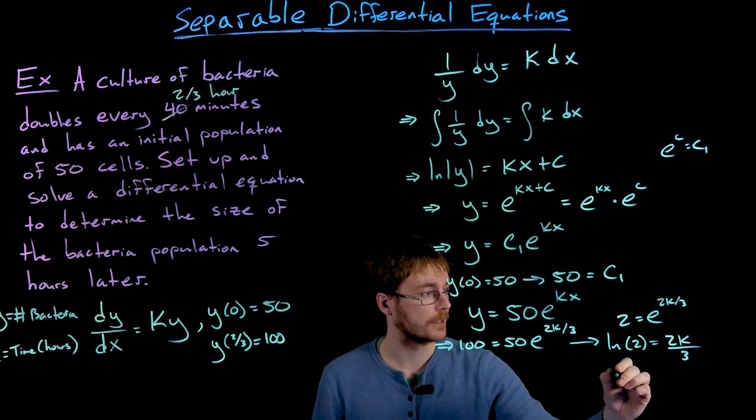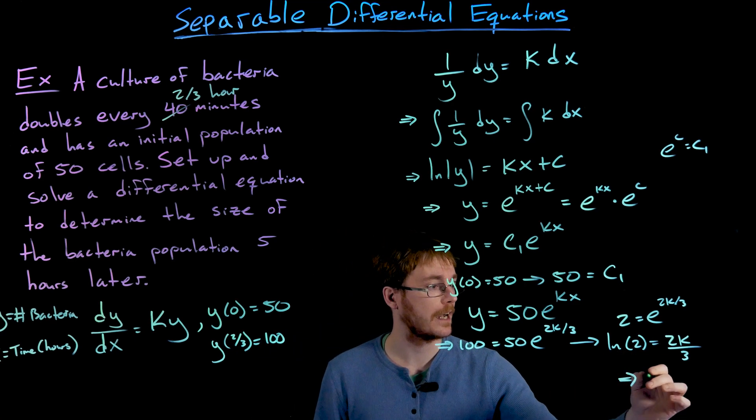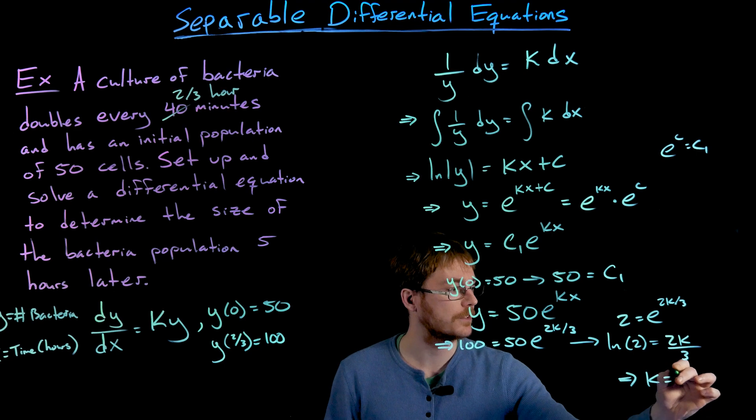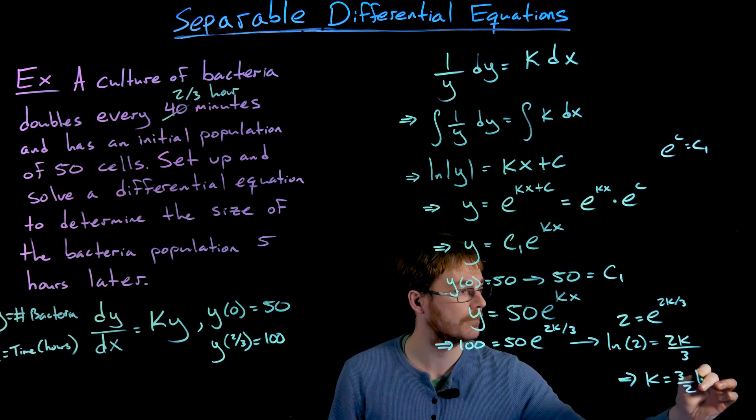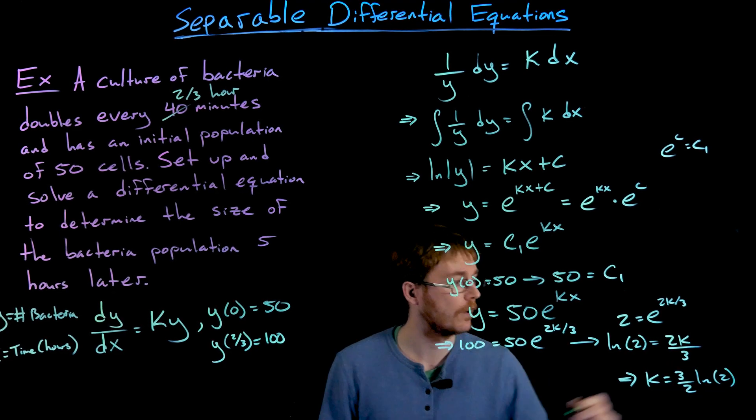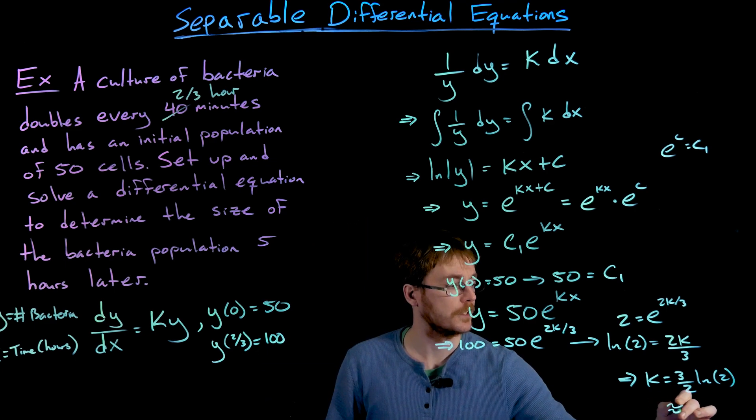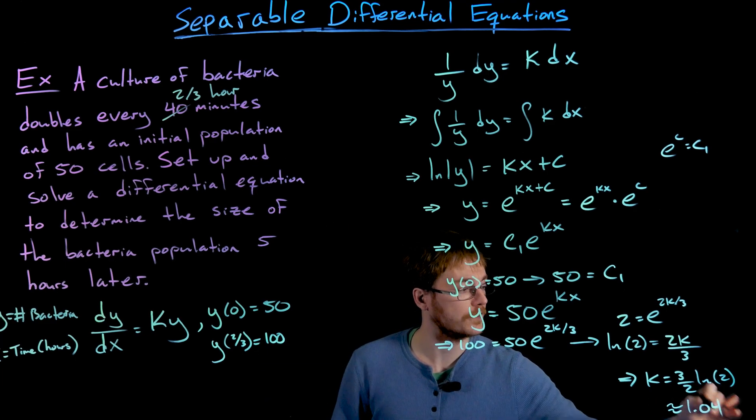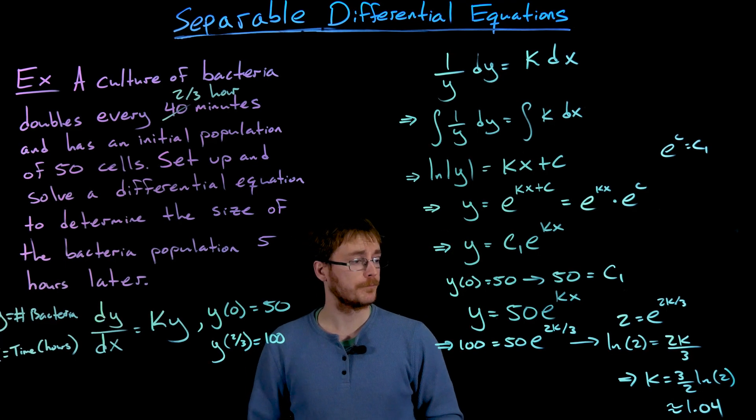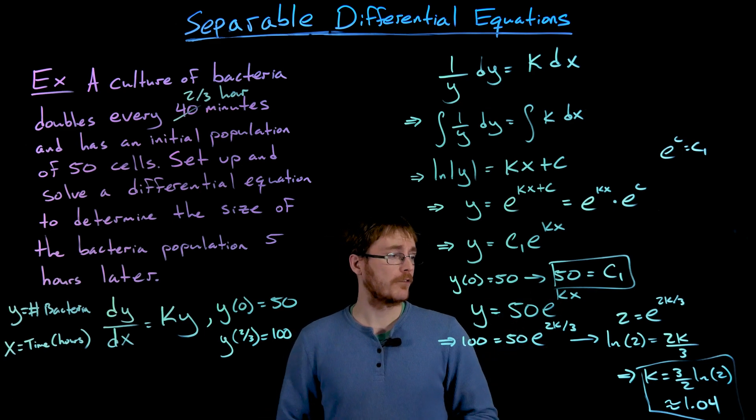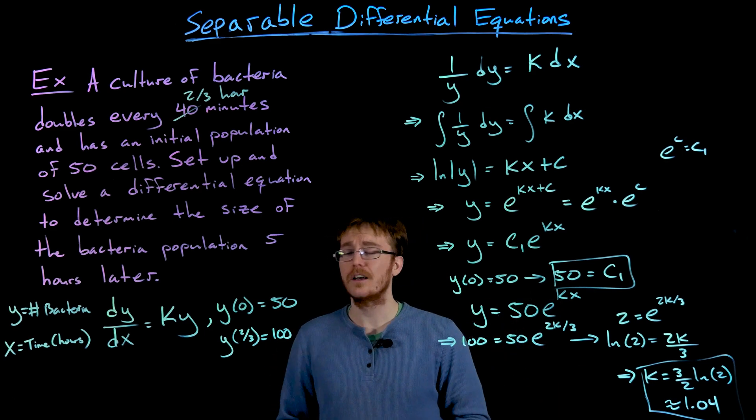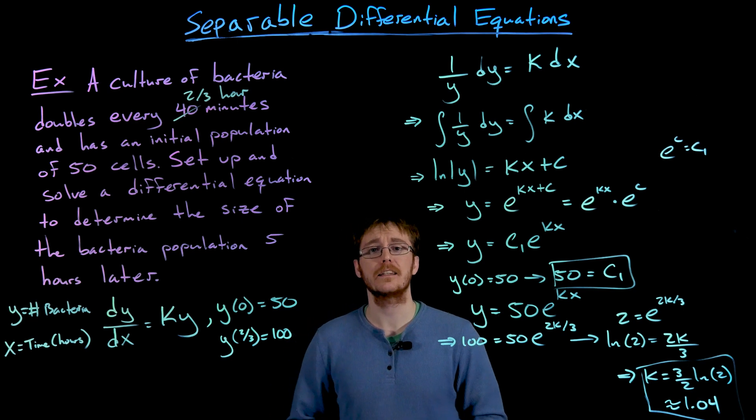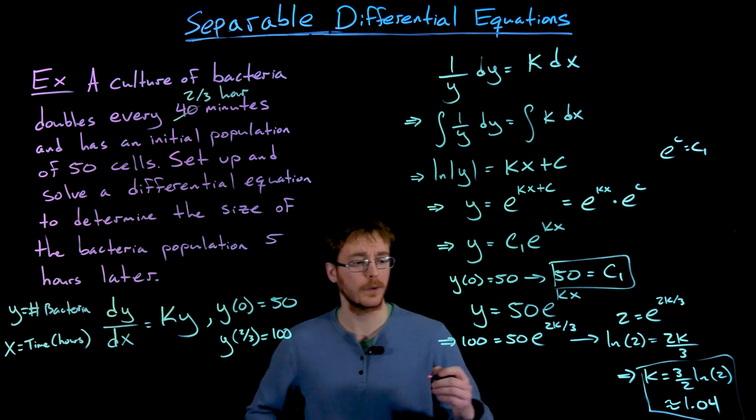Now to finish solving for k, we just multiply both sides by 3 halves. And we see k is equal to 3 halves times the natural log of 2, which is approximately 1.04. So now that we have found the value of our constant c1 and our growth rate k, we can put all that together to construct the solution to our differential equation.